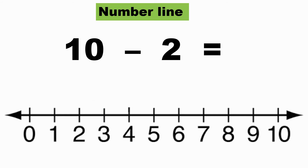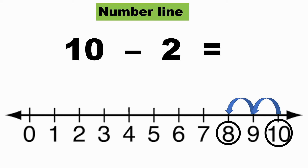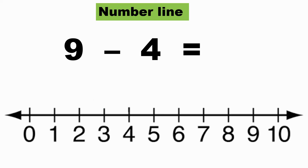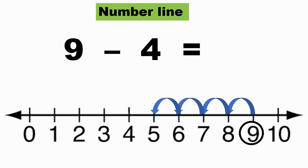Now can you try this one — what is ten minus two? I start with ten and hop to the left two times: one, two. I come to eight. So ten minus two gives me eight. What is nine minus four? I start from nine and move four places to the left: one, two, three, four. I come to five. So nine minus four is equal to five.